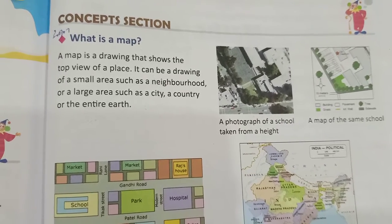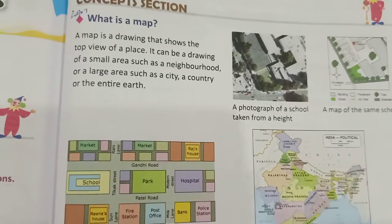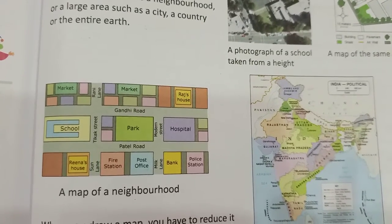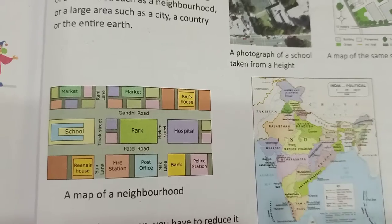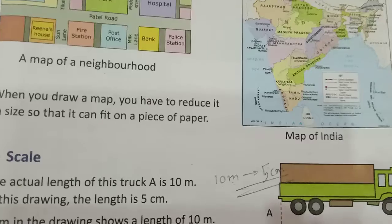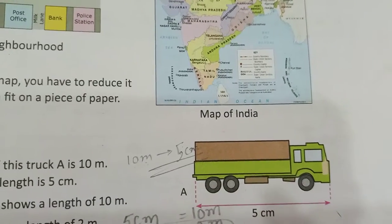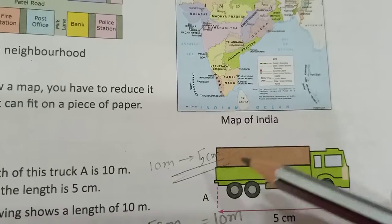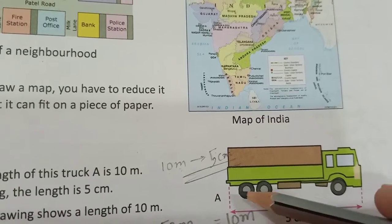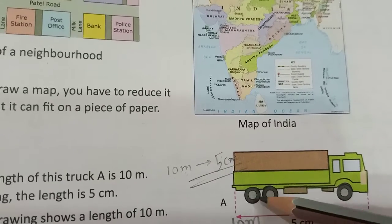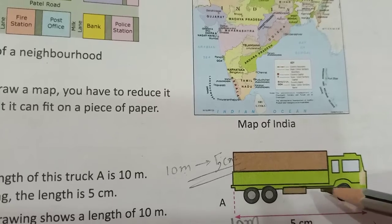In order to understand what scale is, let's look at one image. Can we draw a truck on a piece of paper — the exactly same image? Here, they have drawn a 10-meter long truck on a piece of paper, considering 10 meters is equal to 5 centimeters. Accordingly, they have placed all the parts of the truck.